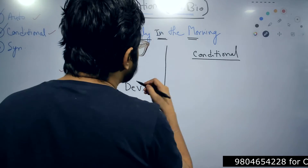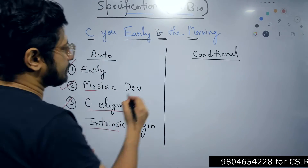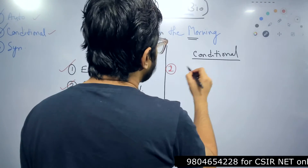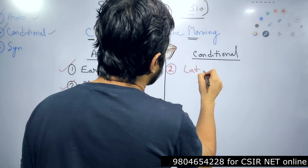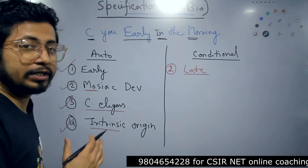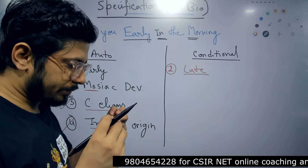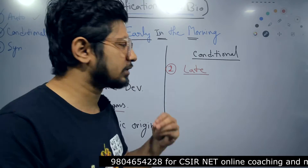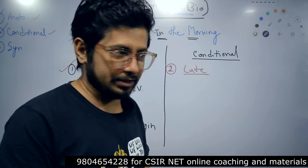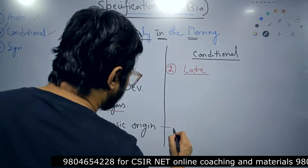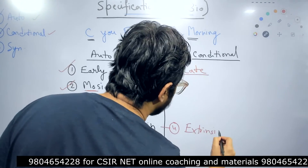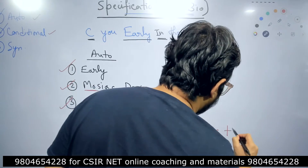Now, what are the changes we can see in conditional specification? The first important one — early in autonomous becomes late in conditional, opposite to that. Most of these features are opposite in nature. The specification in conditional mode is late because the factors involved in the process of conditional specification are not purely intrinsic. So the fourth feature changes too — extrinsic factors play an important role in conditional specification, along with intrinsic ones.